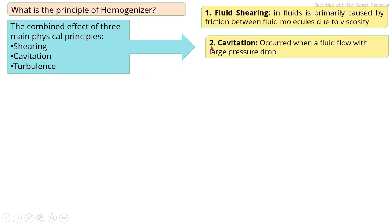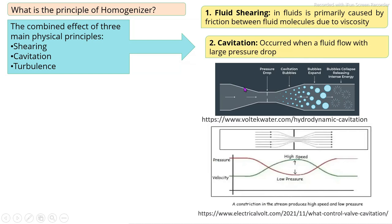The second principal force is the cavitation effect. When the fluid flows through a pipe by reducing the cross-sectional area — the venturi effect — the velocity increases and the pressure drops. Due to this pressure drop, the liquid food forms vapors, these vapors result in the formation of internal bubbles, these bubbles expand and finally collapse. Due to the collapse of the bubbles, internal energy is released and the cavitation effect is formed in this section.